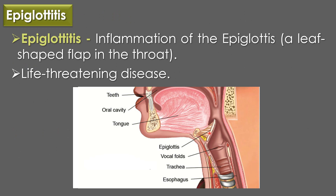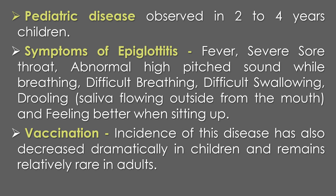The second clinical disease is epiglottitis, an inflammation of the epiglottis region — a leaf-shaped flap in the throat — which can be a life-threatening disease. Epiglottitis is a pediatric disease observed in 2 to 4 year old children. Common symptoms include fever, severe sore throat, abnormal high-pitched sound while breathing, difficulty breathing, difficulty swallowing, and drooling (saliva flowing outside from the mouth). Since the introduction of the vaccine, the incidence of this disease has decreased dramatically in children and remains relatively rare in adults.